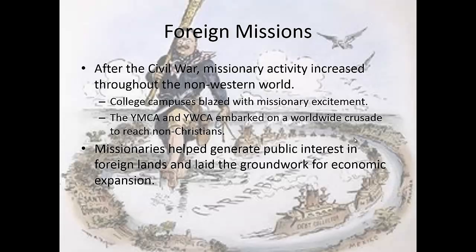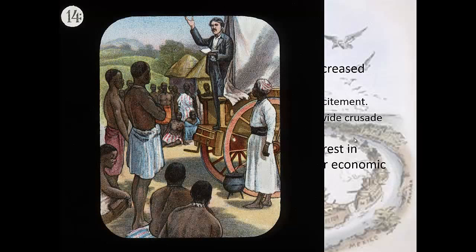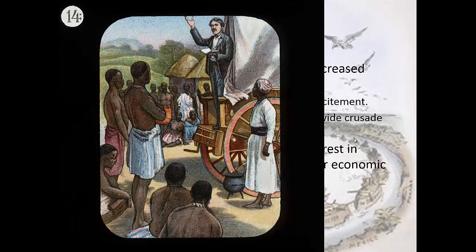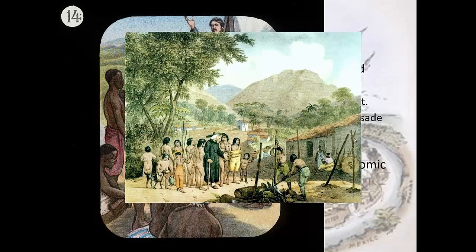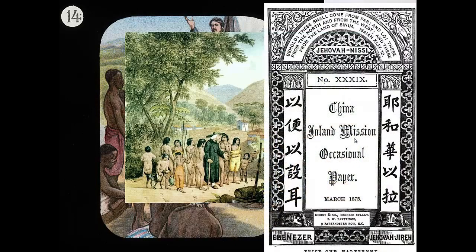After the Civil War, missionary activity is increasing. College campuses start recruiting for missionary experiences, with people going to Africa and Asia especially. The YMCA and YWCA — the Young Men's Christian and the Young Women's Christian Association — are created during this time period to create a worldwide crusade to reach and civilize non-Christians. They help generate public interest in foreign lands and lay the groundwork for a lot of the economic expansion to come, especially after the Panic of 1893 when we're looking for new markets and raw materials. China is going to receive a lot of this effort and energy.